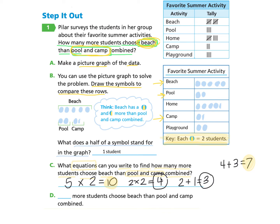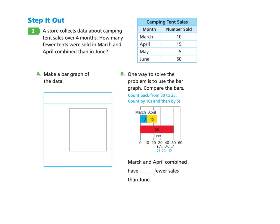Now we compare beach to the total of pool and camp combined. We create an equation: 10 minus 7, which is beach take away pool and camp. The difference is three. So for Part D, three more students choose beach over pool and camp combined.